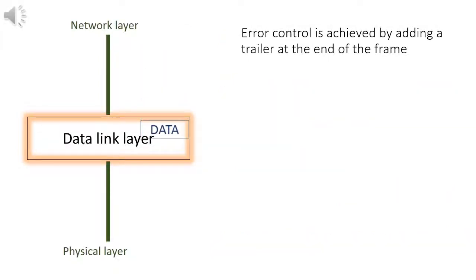For error control, it adds a trailer at the end of frame. After these processes, the data is sent to the lowermost layer, called physical layer.